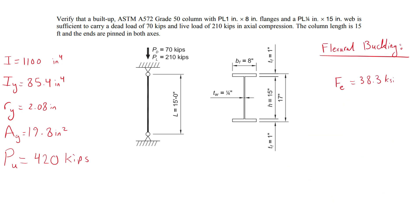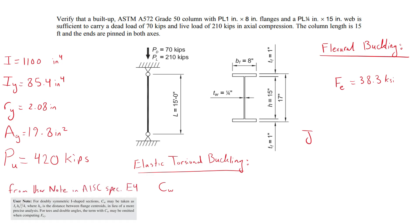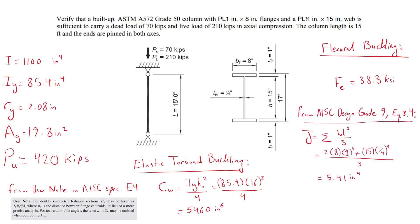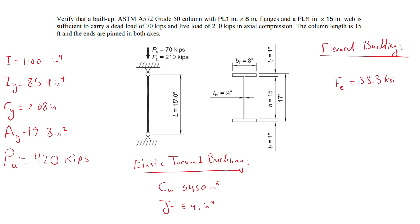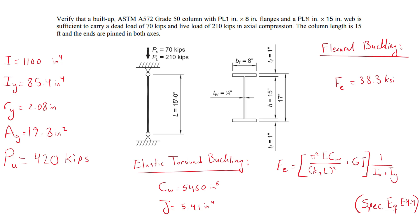Because this section is doubly symmetrical, we also check the elastic stress for torsional buckling, requiring the warping constant Cw and torsional constant J. Cw is calculated from AISC specifications chapter E4 user note, and J from AISC design guide 9 equation 3.4. Using AISC equation E4-4, the elastic modulus is 29,000 ksi, the shear modulus is 11,200 ksi, K = 1, and L = 15 feet converted to inches. The torsional buckling elastic stress is 91.9 ksi, which exceeds the flexural buckling elastic stress of 38.3 ksi, so flexural buckling governs.